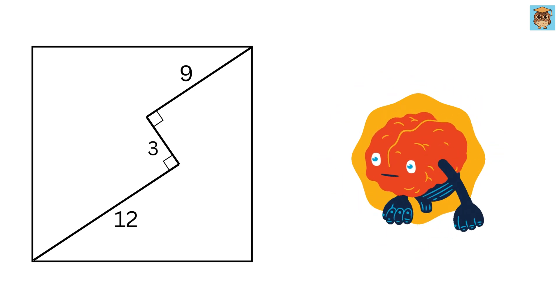This question will truly test your intelligence. We have a square whose side length is x units. Now we draw this piece from this vertex of the square which is of length 12 units. Look properly that this line is not the diagonal of this square.